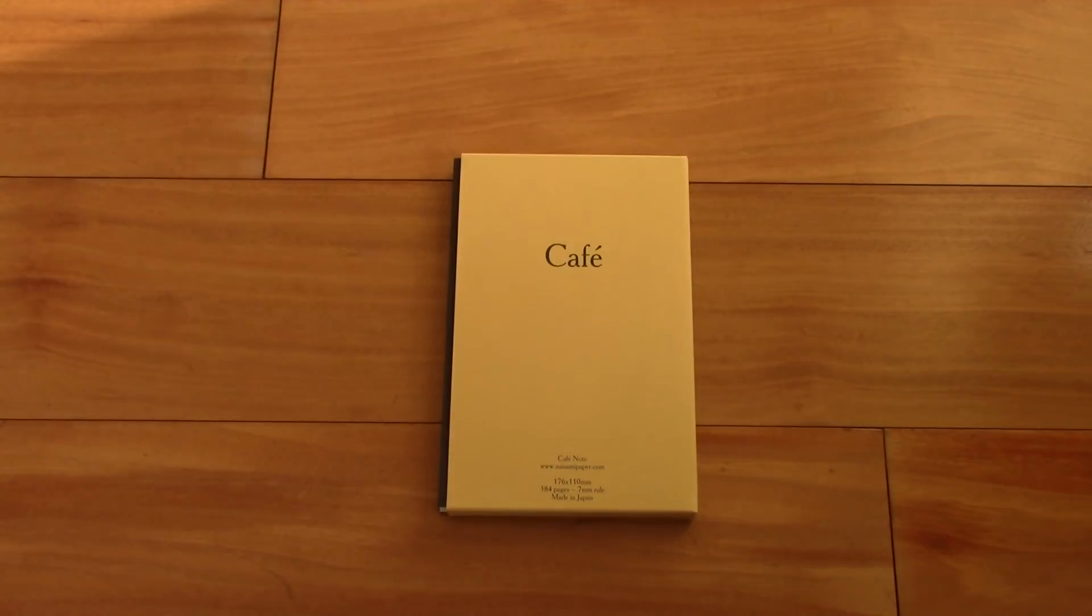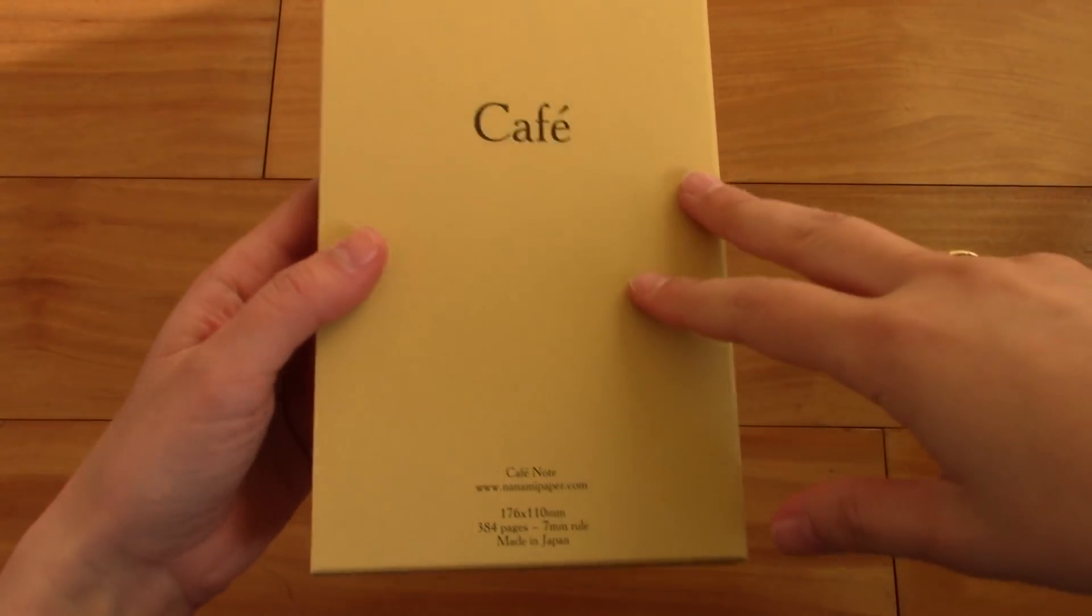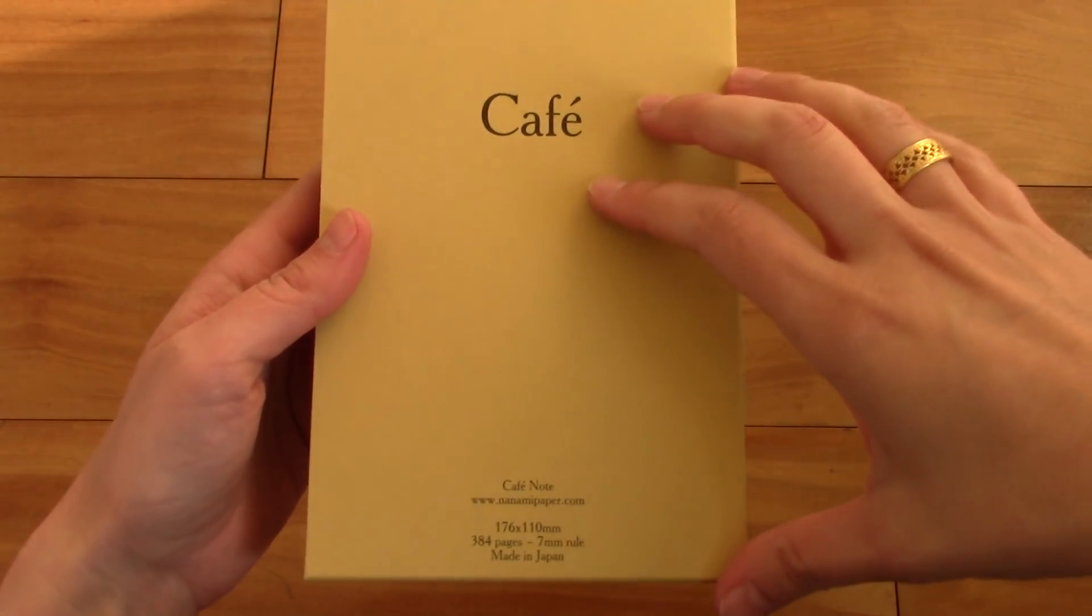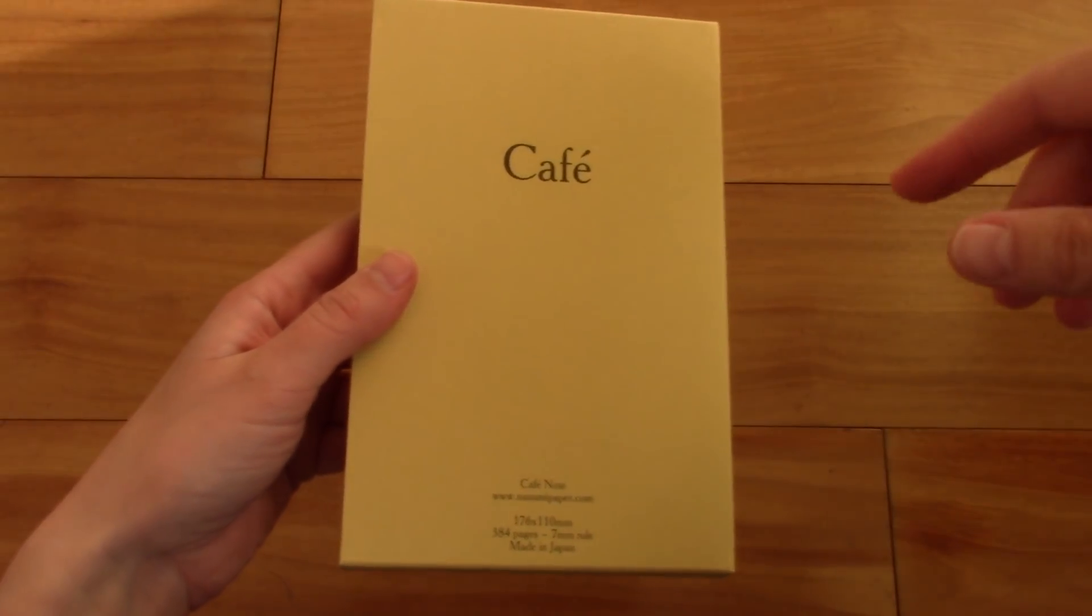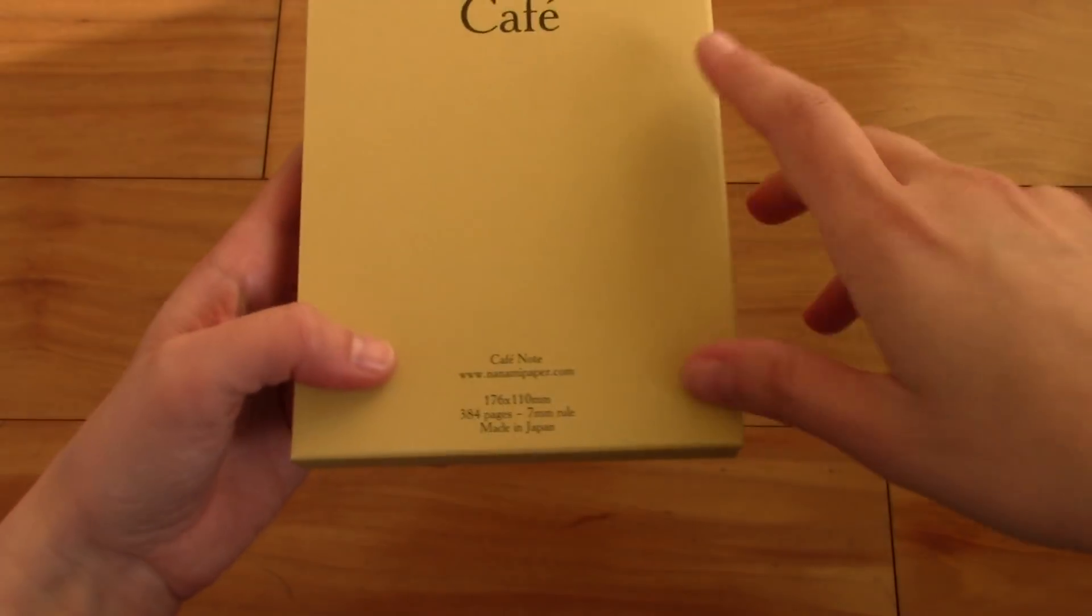This is a notebook that Nanami Paper came out with more recently, and it is a slightly smaller version of their really popular 7Cs series that are A5.